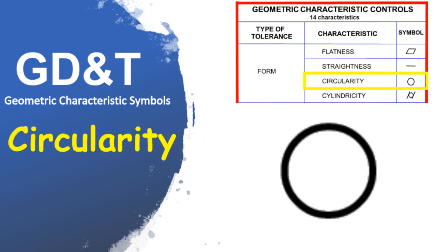Circularity, sometimes called roundness. Circularity tolerance is used to control the roundness of circular parts or features. It controls each circular element of a cylinder independent of each other. Circularity tolerance does not need to be related to a datum, and is used when a part needs to be perfectly round, such as a rotating shaft or a bearing.